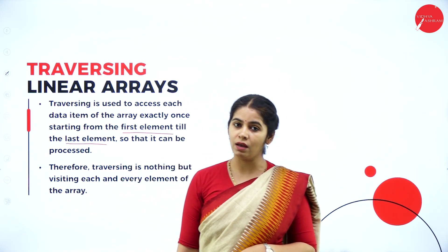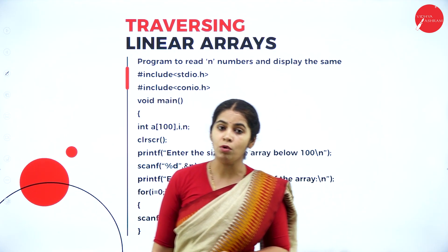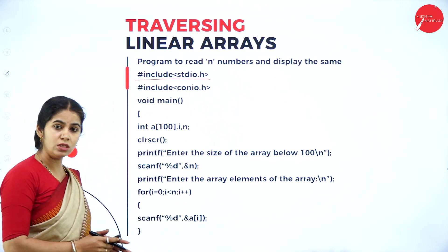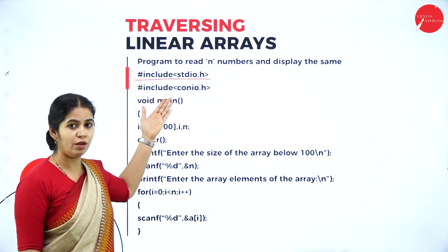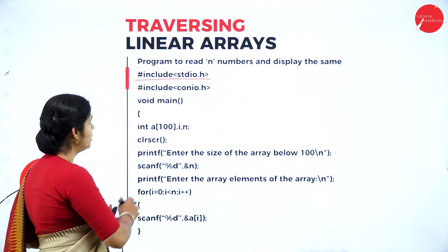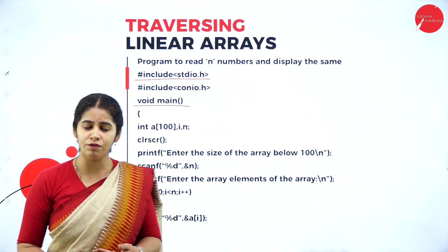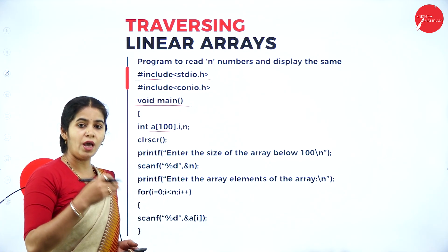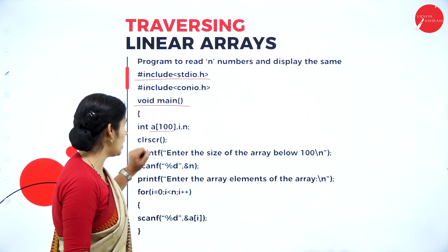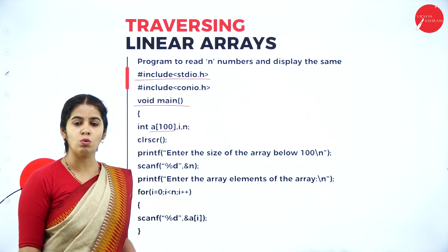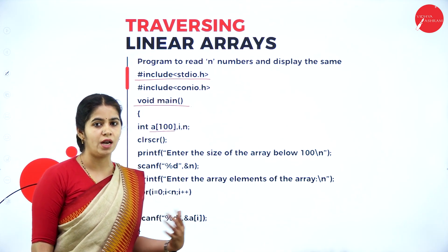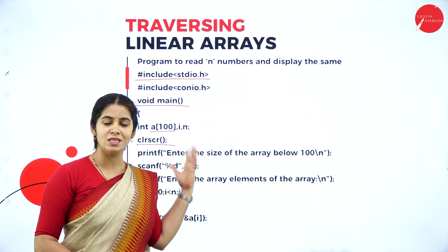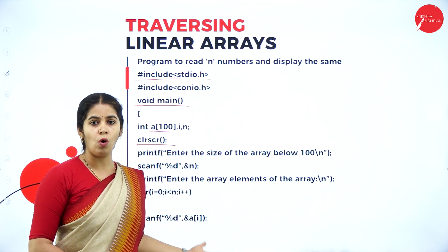Let us see how we can do traversing using C programming. This is a C program to traverse each element of an array. We include the standard input/output header file and conio.h header file. In the main function, we declare the variables: an array, the variable i for the index, and n for the length of the array. clrscr() clears the screen.